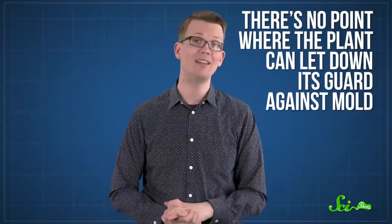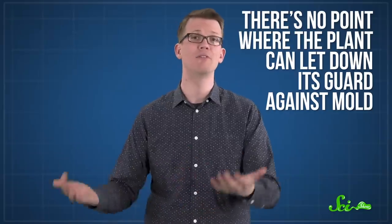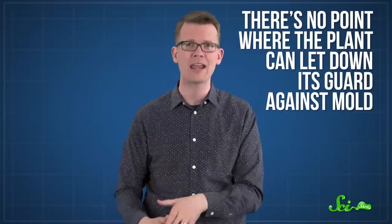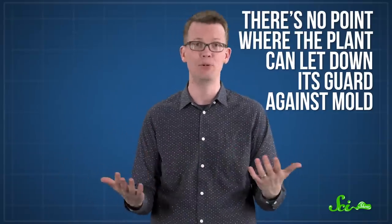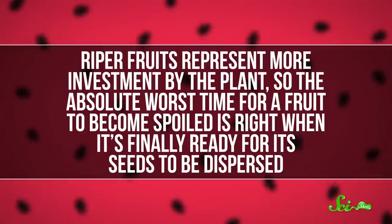There's no point when the plant can let down its guard against mold, because the fungus can and will attack, no matter how big or small the pepper is. And riper fruits represent more investment by the plant. So the absolute worst time for a fruit to become spoiled is right when it's finally ready for its seeds to be dispersed. So that increase in spiciness over time is another point in favor of the idea that it probably evolved as a defense against insects and the fungi they facilitate.